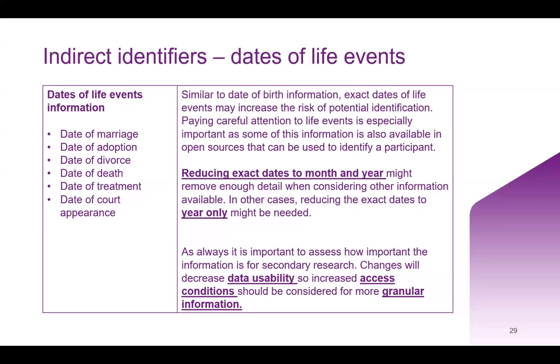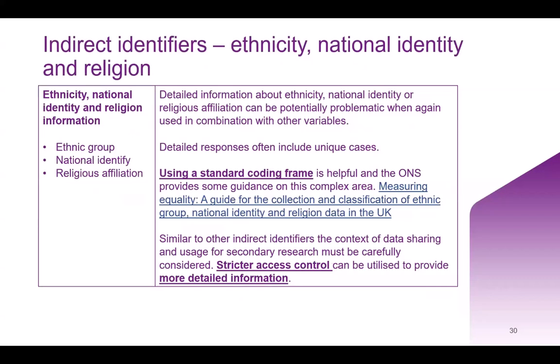As always, it's important to assess how important the information is for secondary research, as any changes will decrease data usability. Looking at increased access conditions might also be considered if you need to supply more granular information. Detailed information about ethnicity, national identity, or religious affiliation can be potentially problematic when used in conjunction with other variables, as detailed responses will often include unique cases. Using a standard coding frame is helpful — the ONS provides guidance on that complex area. Stricter access control can be applied to provide more detailed information.